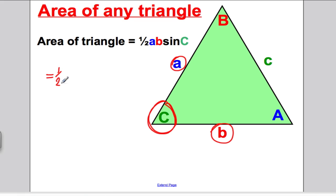Rearrangements of this could be a half B, C, sine of A, because A would be in between B and C. Or a half A, C, sine of B. All of those would get you the right answer here.